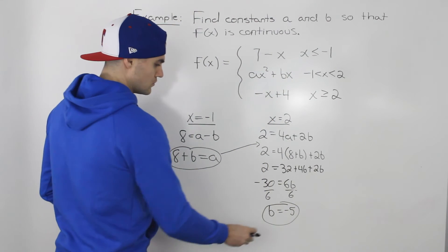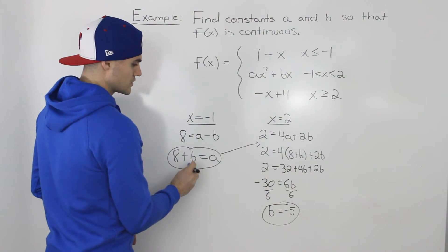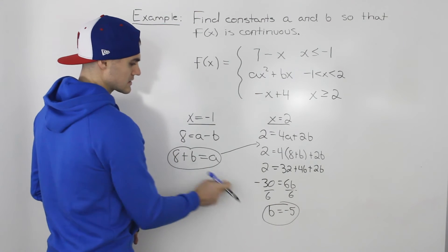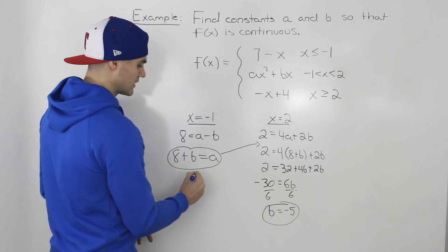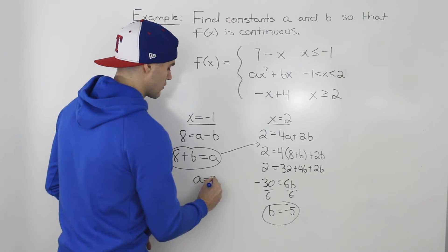And then to solve for the a value, we can just sub it into this equation. So 8 plus that b value of negative 5, we would get an a value of 3.